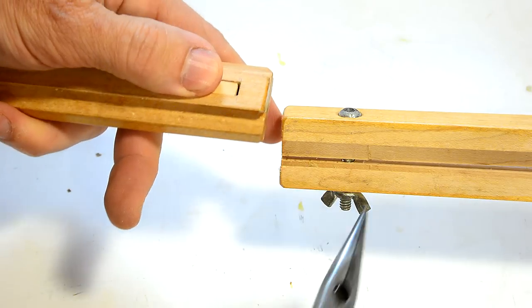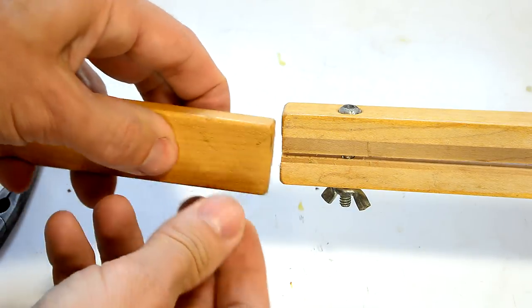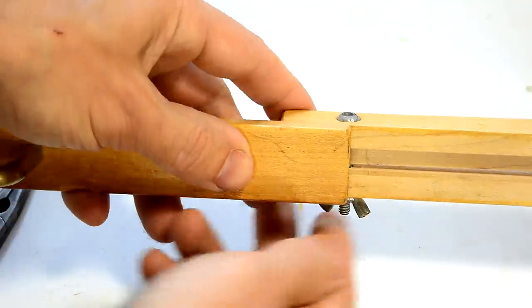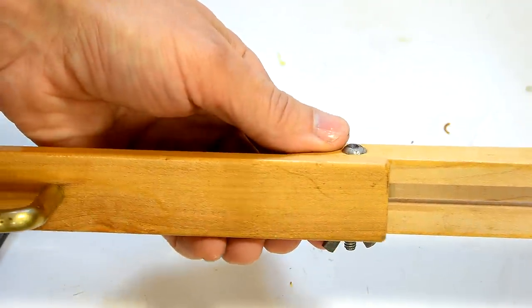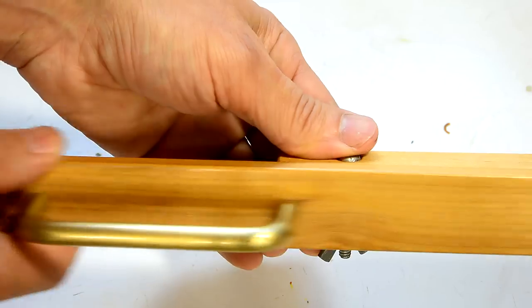And in here, there's a little notch here. So once I slide this in, the block catches the notch and you can hear it click. And now when I pull it, it just always catches that notch.